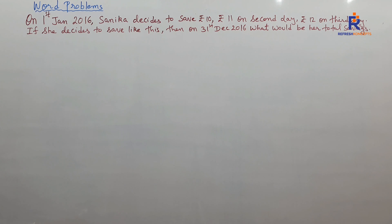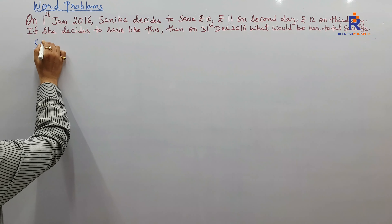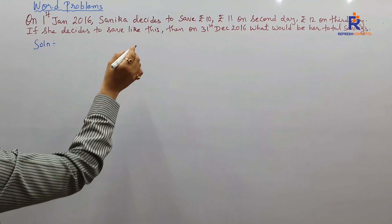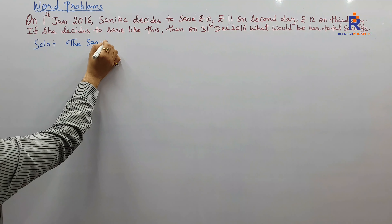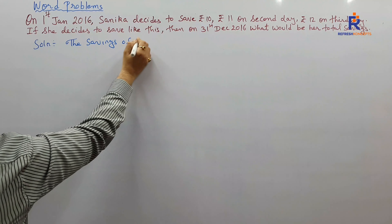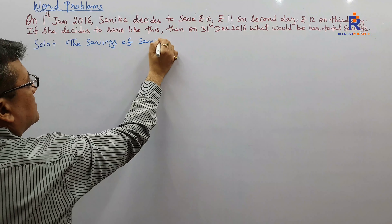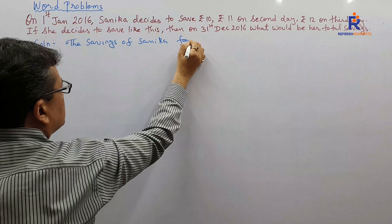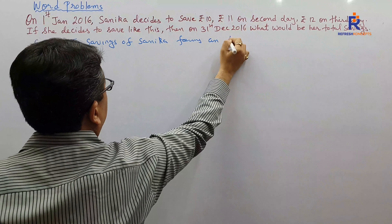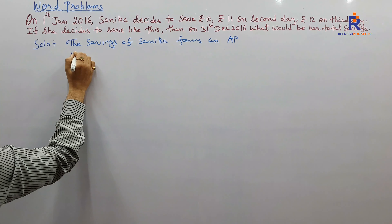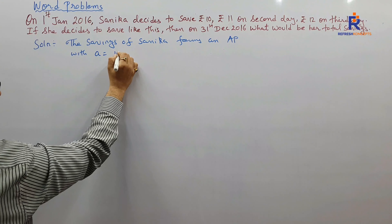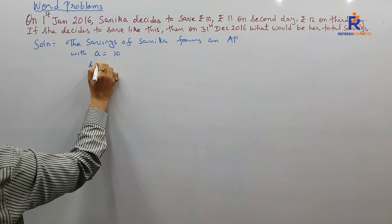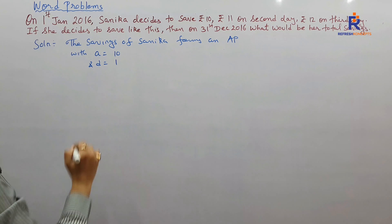Let's write down that solution. The savings of Sanika form an AP with the first day saving A = 10 and D = 1.